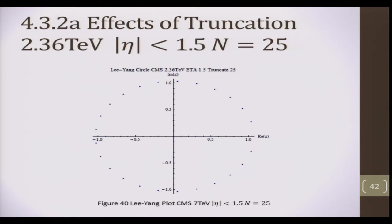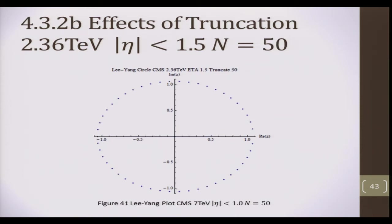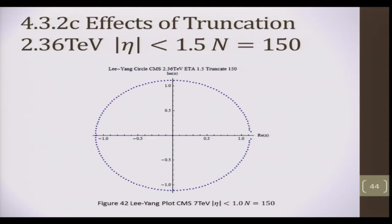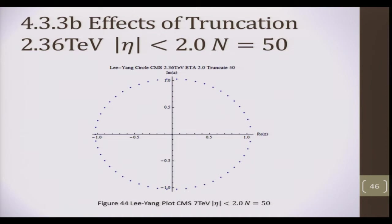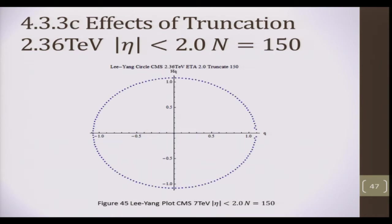The same for the eta 1.5 case, for the same energy. No ear at N is 25. No ear at N is 50. At N is 150, again, for a large truncation you see an ear. And the same for 2.0. No ear, no ear, and again an ear.